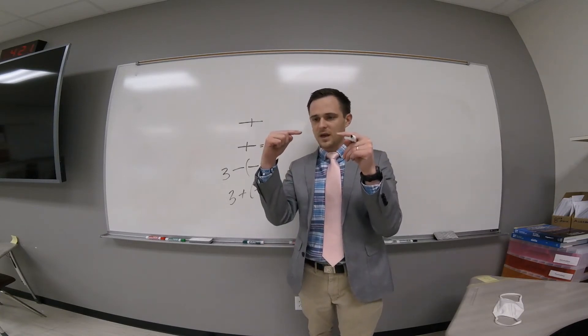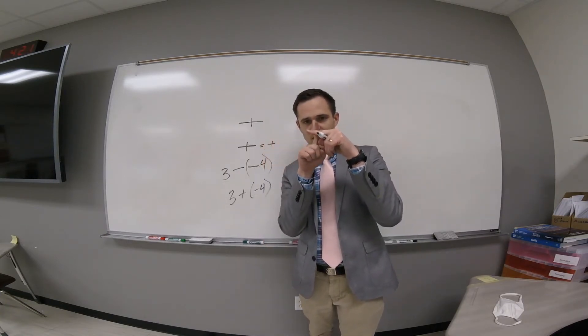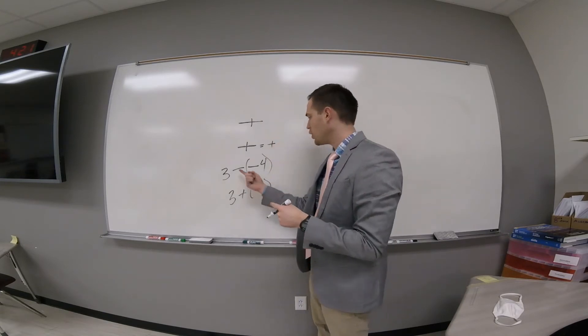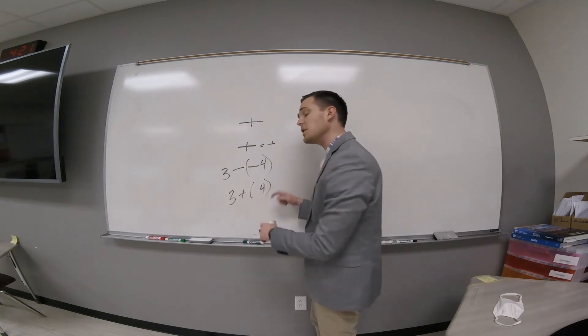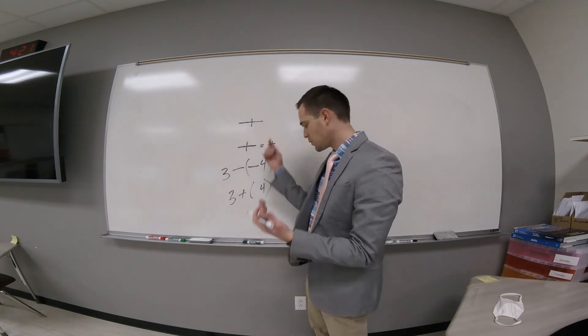And I just remind them, wait a minute, put your negatives back up. How many negatives needed to make a positive? They say two. Well, you use both of them up. So there cannot be another left over. So it would just be three plus four. That's where we start.